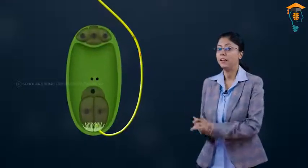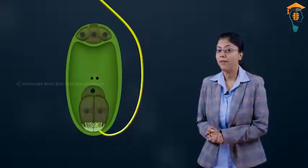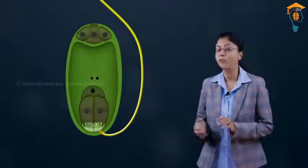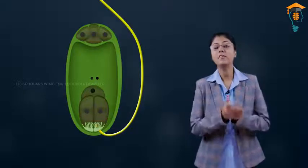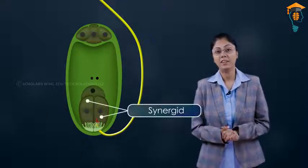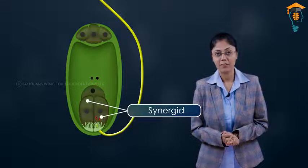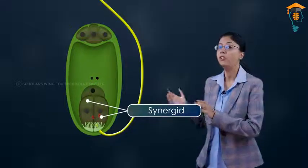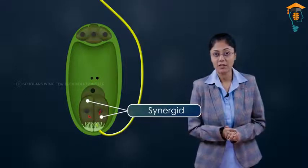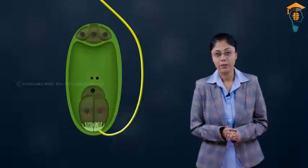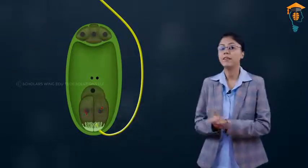If you see, you will observe that at the micropylar end of the embryo sac there is the presence of a degenerating synergid. Now as the pollen tube enters the synergid, it will burst open and it will release the male gametes in the cytoplasm of the degenerating synergid.